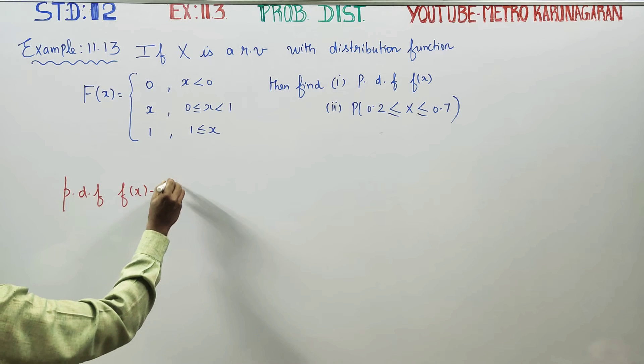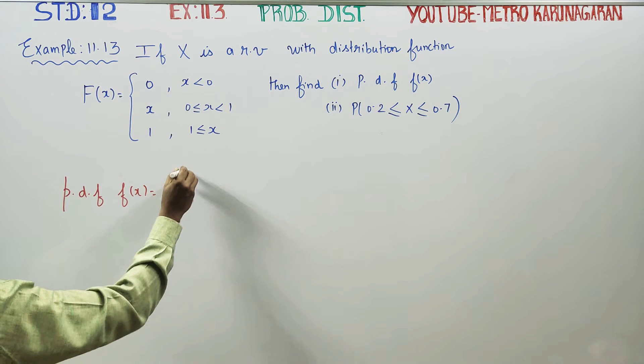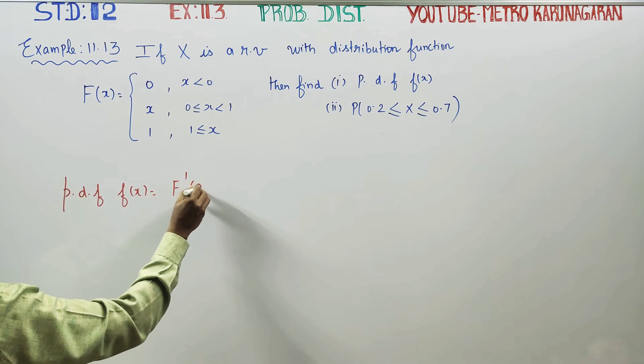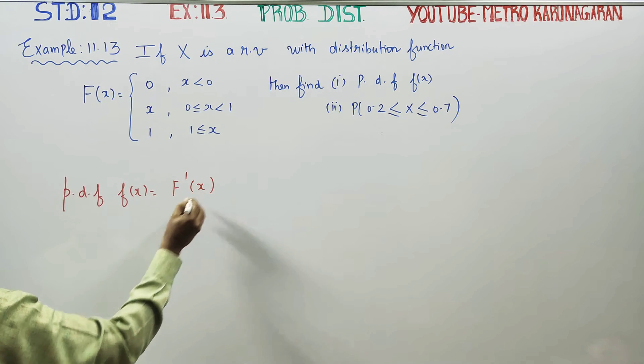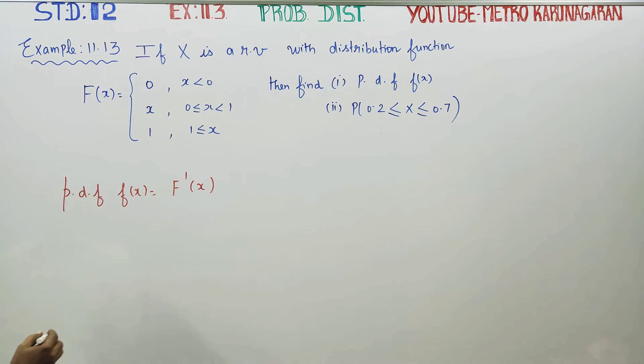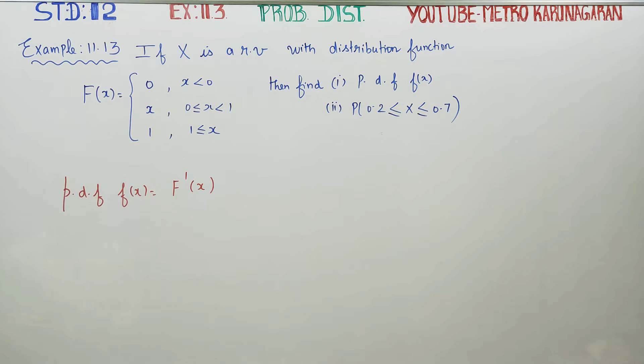Small f of x: you differentiate the distribution function, and you will be getting the probability density function.